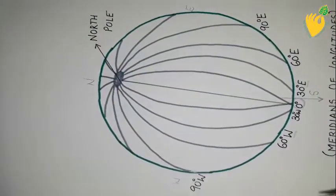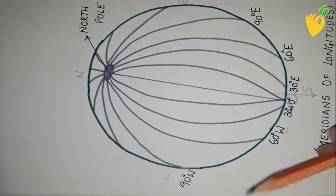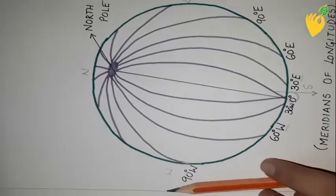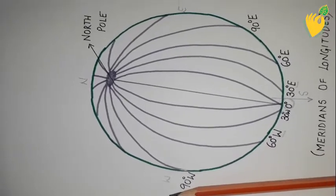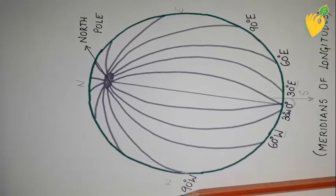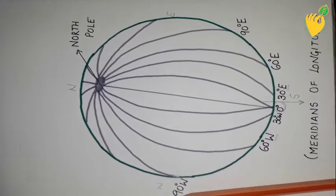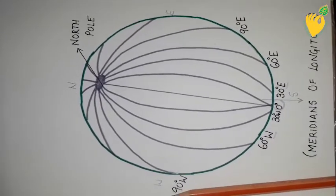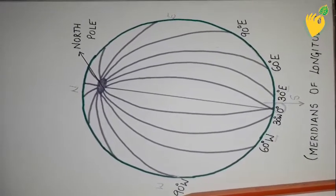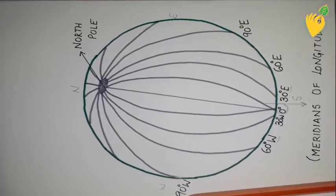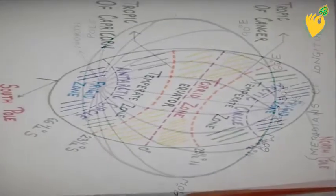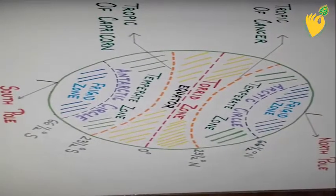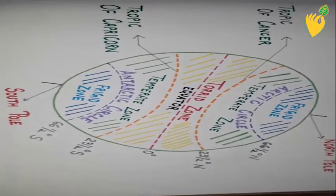To know the exact location of a place, we need to know both the degrees of latitudinal as well as longitudinal lines.